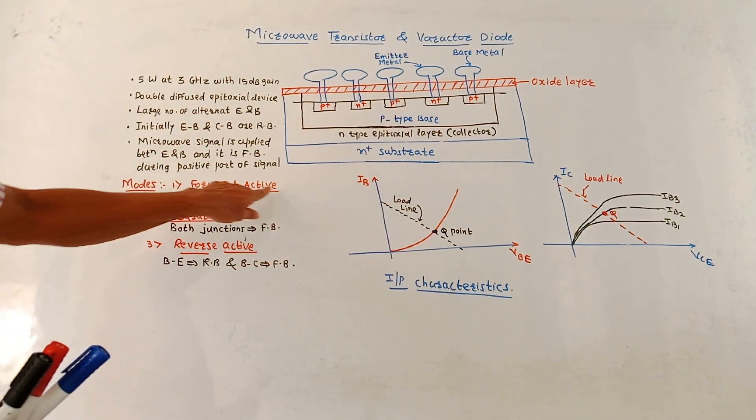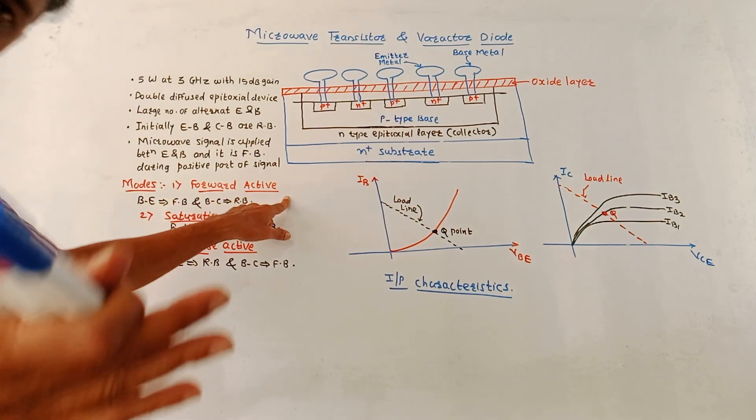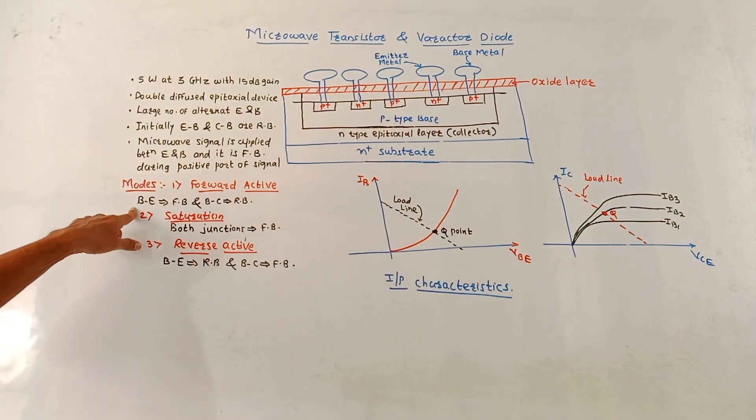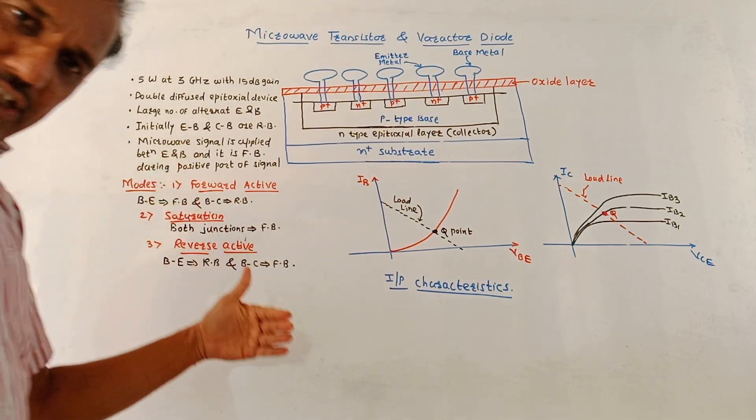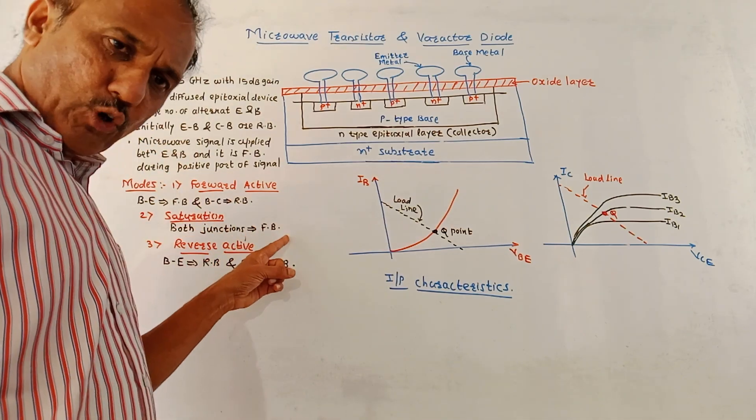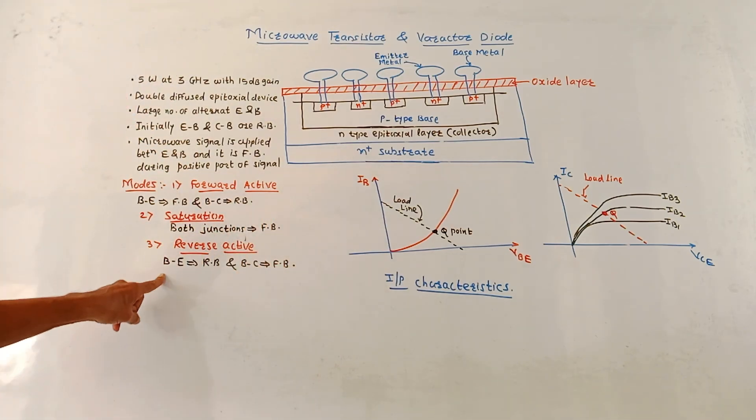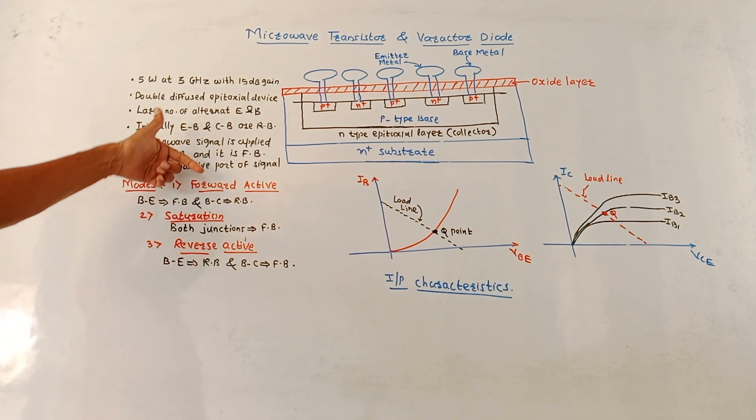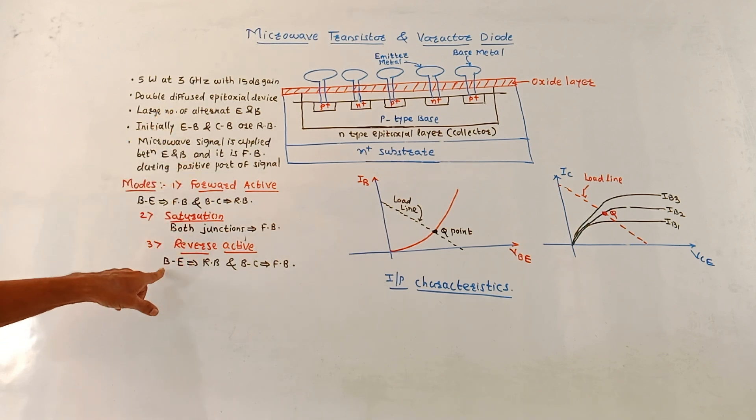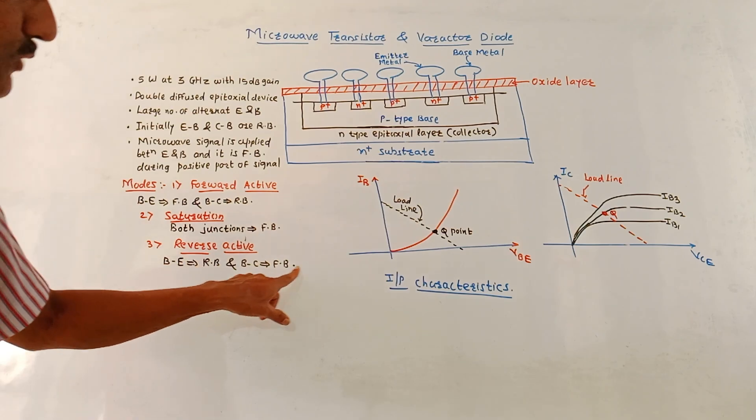There are different modes of operation of this Microwave Transistor. First is forward active mode which is also called normal mode. In this case base emitter junction is forward biased and base collector region is reverse biased. Second region is saturation region. In this region both the junctions are forward biased. Third is reverse active region. It is opposite to that of forward active region. In this case base emitter is reverse biased and base collector is forward biased.